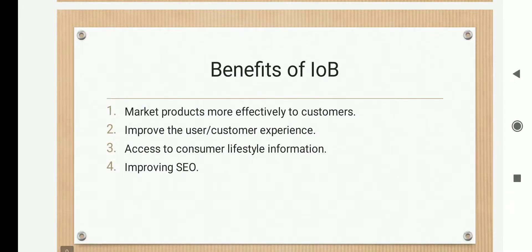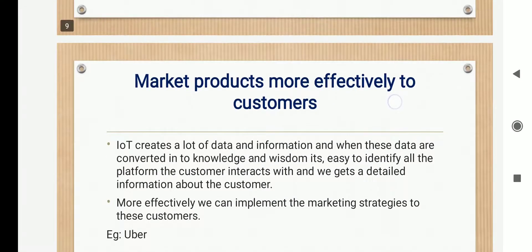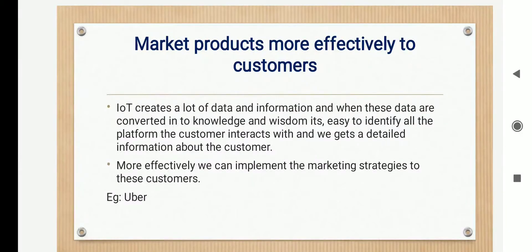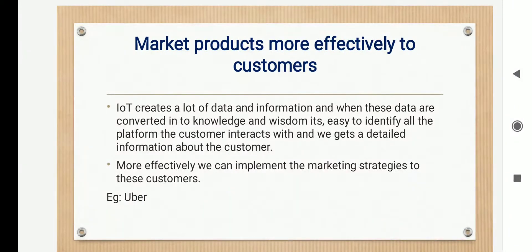The benefits of IOB in business include four areas: market products more effectively to customers, improve the user and customer experience, access to consumer lifestyle information, and improving SEO. With the introduction of IOB, IoT creates a lot of data and information about a customer. These data and information are passed through a psychological framework and transformed into wisdom or knowledge. Information about all the platforms that a particular customer interacts with is gained, providing a detailed profile of that customer — as seen in the Uber example.